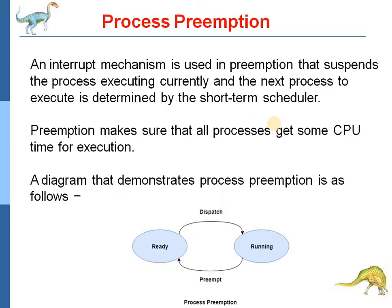Second, process preemption. In case of an interrupt mechanism, preemption occurs — that means suspending the running process. Preemption makes sure that all processes get some CPU time for execution, as shown in this figure.